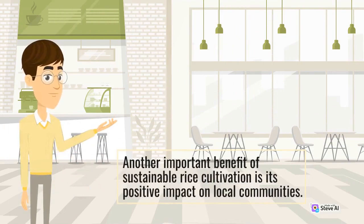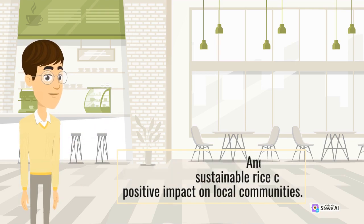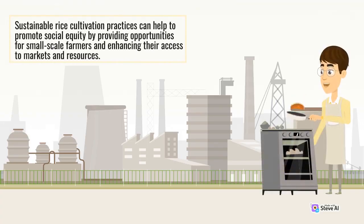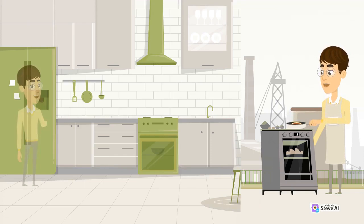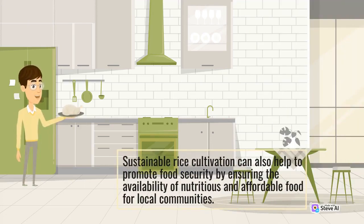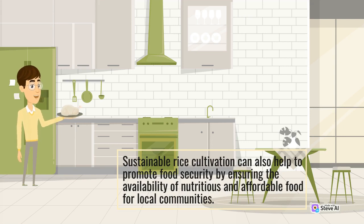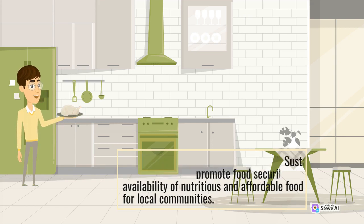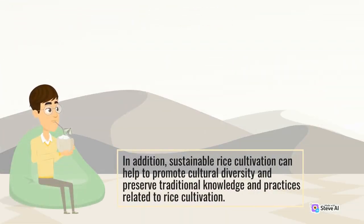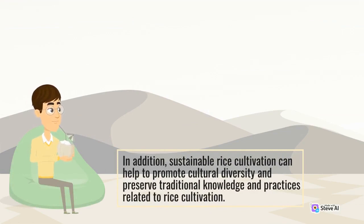Another important benefit of sustainable rice cultivation is its positive impact on local communities. Sustainable rice cultivation practices can help to promote social equity by providing opportunities for small-scale farmers and enhancing their access to markets and resources. Sustainable rice cultivation can also help to promote food security by ensuring the availability of nutritious and affordable food for local communities. In addition, sustainable rice cultivation can help to promote cultural diversity and preserve traditional knowledge and practices related to rice cultivation.